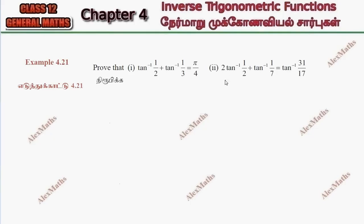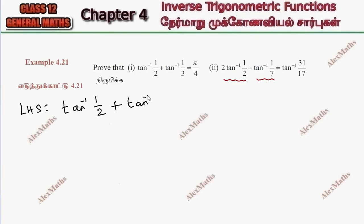Subdivision 2. LHS is 2 tan inverse one-half plus tan inverse 1 by 7. We can write 2 tan inverse one-half as tan inverse one-half plus tan inverse one-half, then add tan inverse 1 by 7.